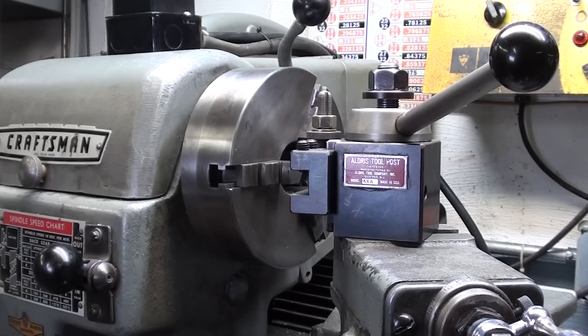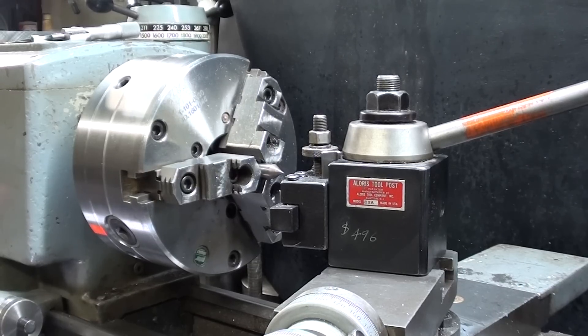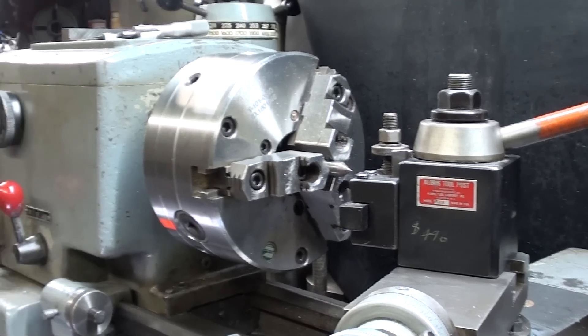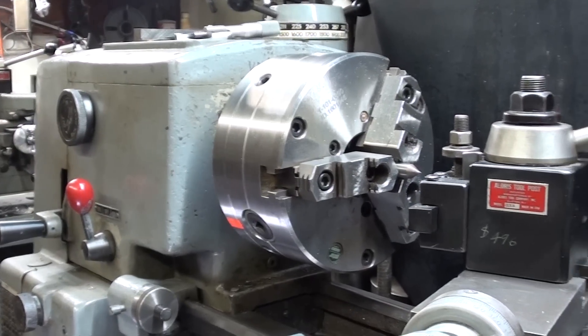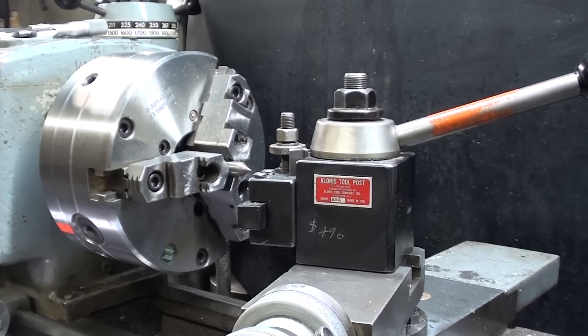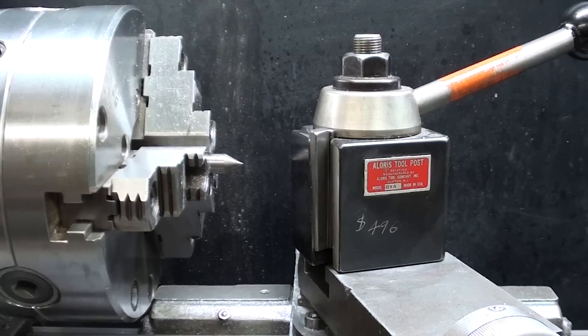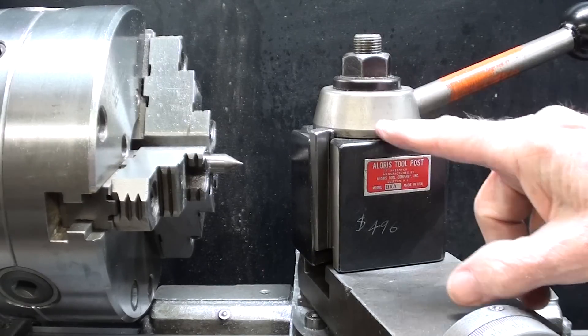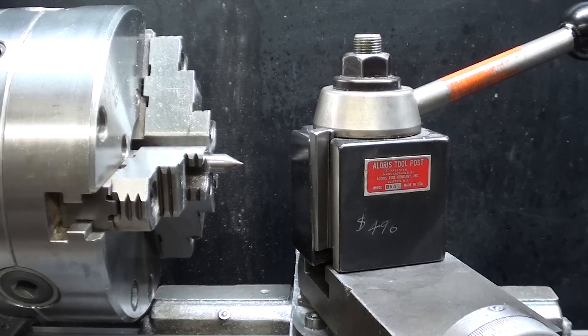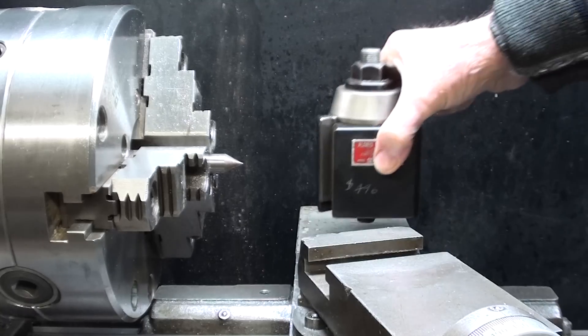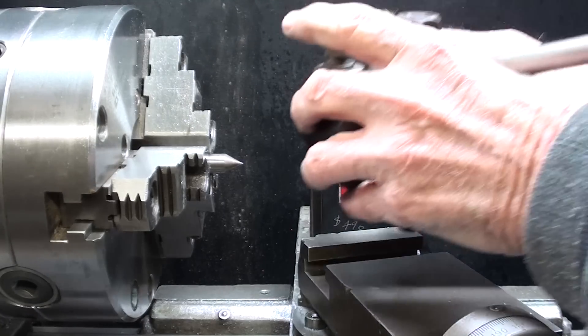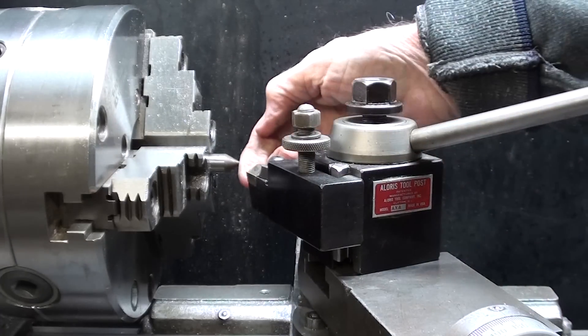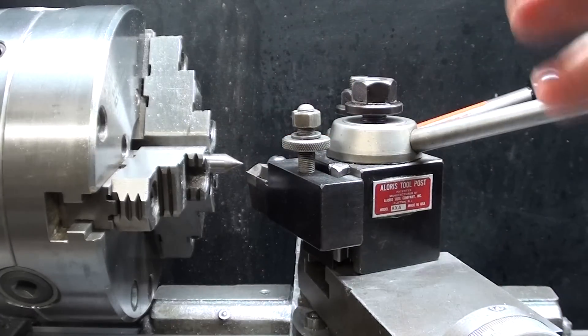Here's the Alorus AXA on a 12 inch Craftsman Atlas lathe. Notice that it is perfectly proportioned. And here's the BXA on a 12 inch Clausing Lathe. Also, just perfect fit and perfect proportion. But wait, again, this is the BXA, but you can use an AXA on a machine this size. However, it doesn't always reach up to the right height, and it looks a little puny.